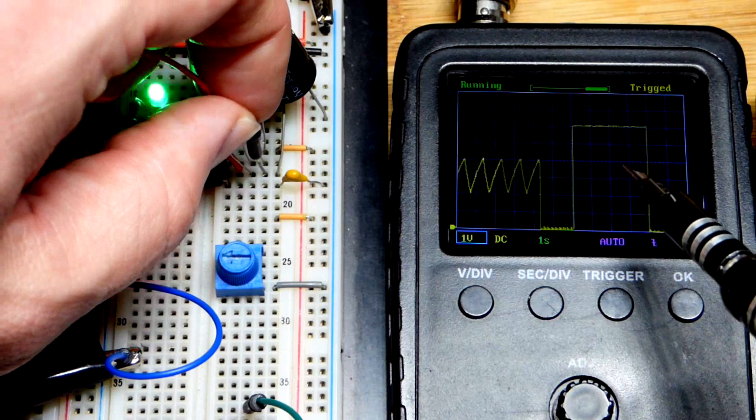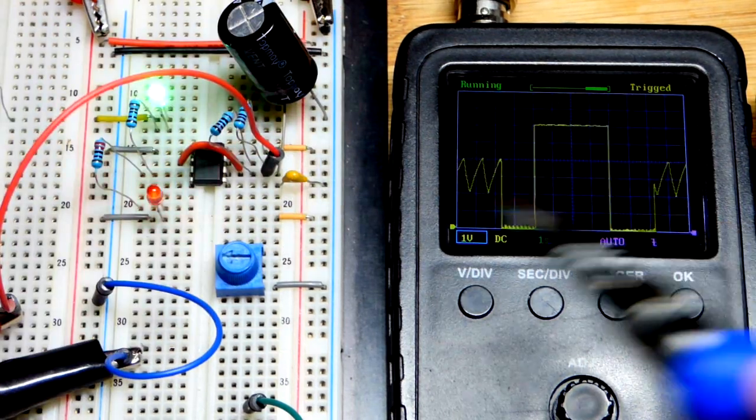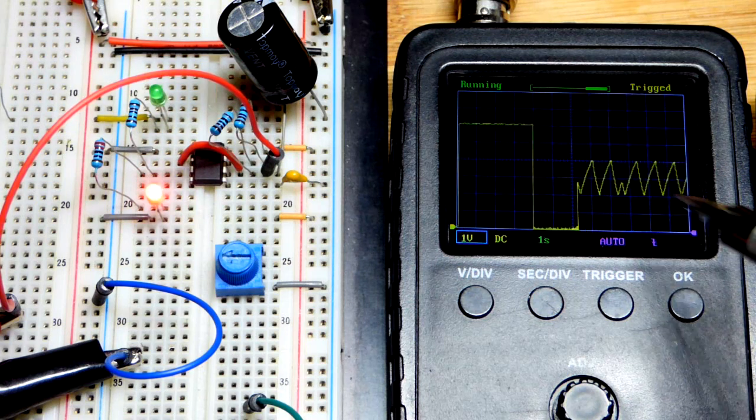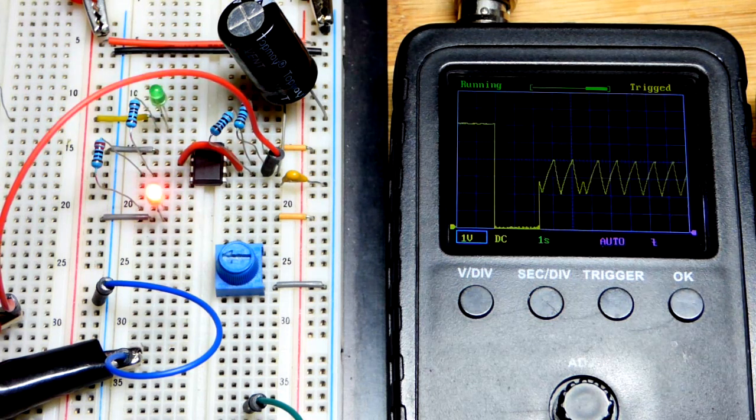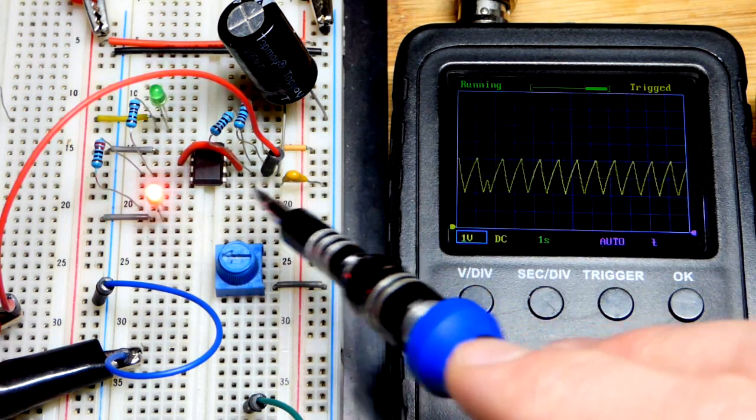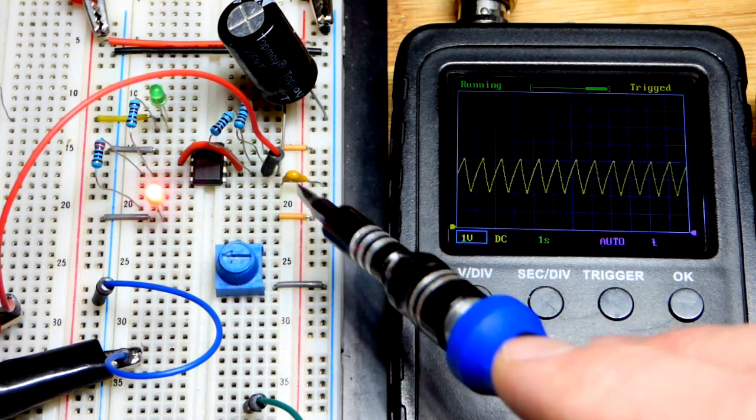That's when the output is high, and then when the output goes low the capacitor is discharging down to one-third of the supply voltage, going back and forth. So what we're going to focus on now is adjusting that with pin number five, the control pin.